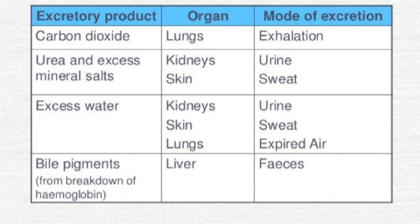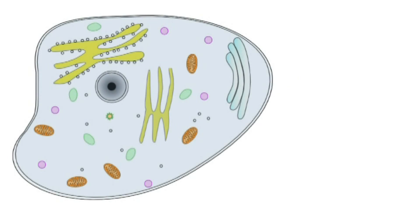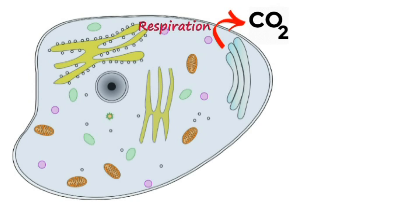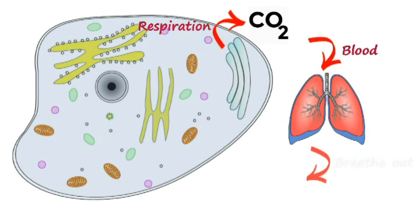There are several excretory products formed in our bodies, but two in particular are produced in greater quantities: carbon dioxide and urea. We know there are millions and millions of cells in our body, and carbon dioxide is produced by almost every cell because of aerobic respiration. The waste carbon dioxide is then transported from the respiring cells to the lungs via the blood, and then it is breathed out into the air.